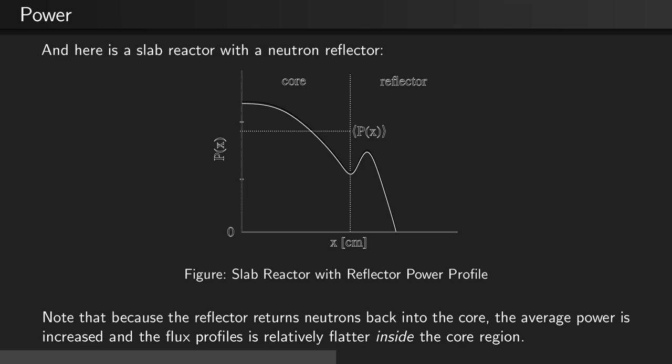If instead we added a reflector rather than having a vacuum, where the reflector bounces neutrons back into the core, we'll see that the shape of the power shifts such that the core average power is significantly higher than without the reflector.